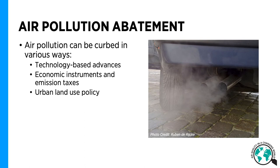I highlight three air pollution abatement strategies in this lecture that can be used to curb air pollution in urban areas. First, there are technology-based advances that can be induced by different types of legislation. Secondly, there are economic instruments and emission taxes that can be used to steer behavior. And thirdly, urban land-use policy can help to create urban environments that create opportunities for good air quality. A successful mix of these strategies is always context-dependent and tied to the economic and social development of a city.